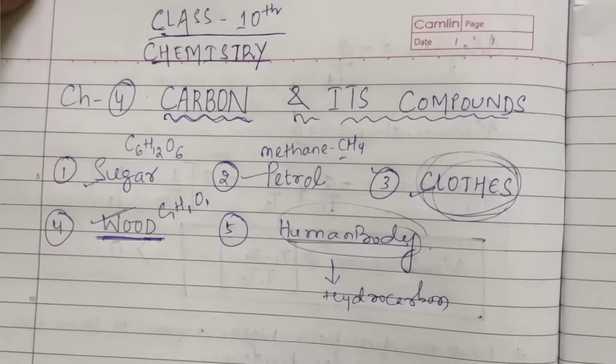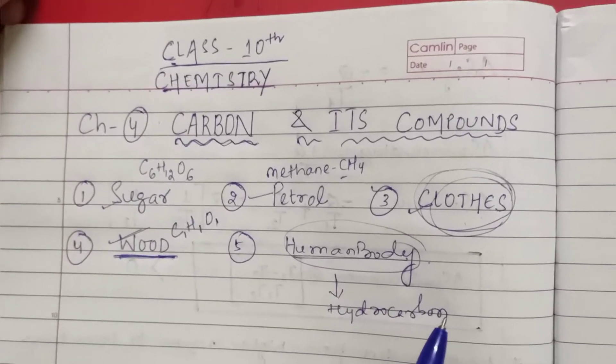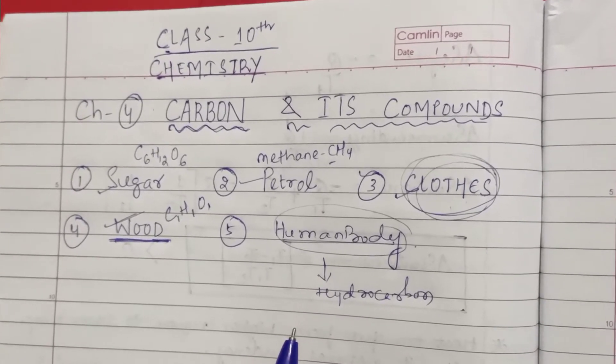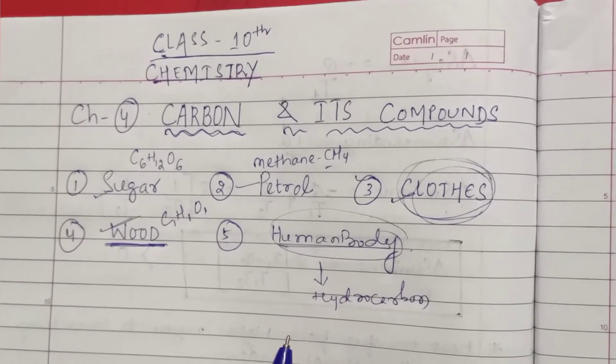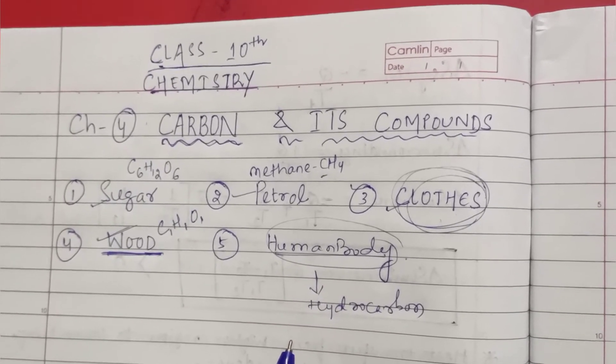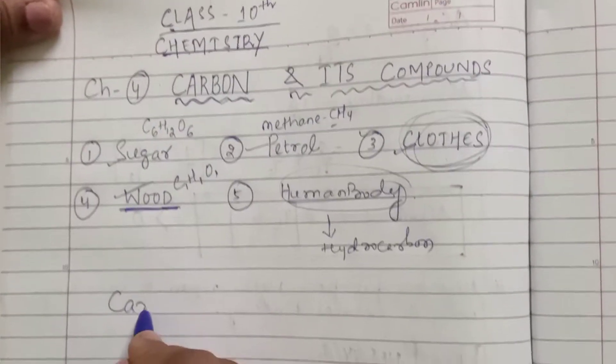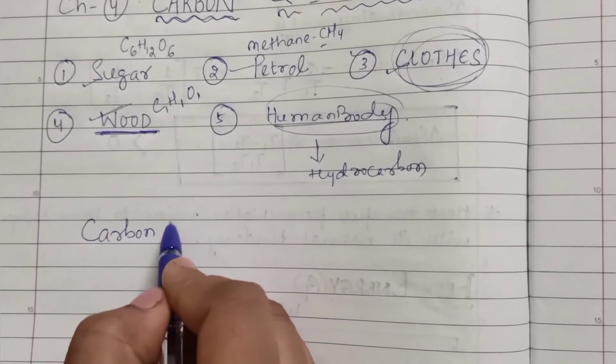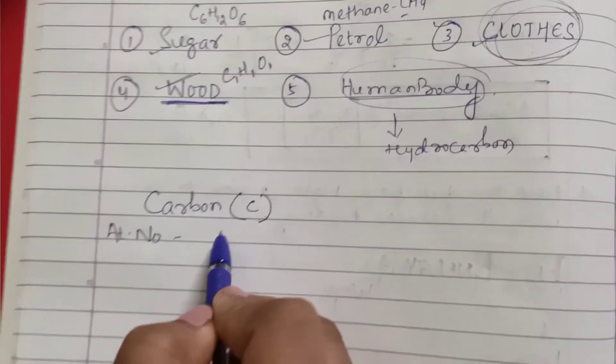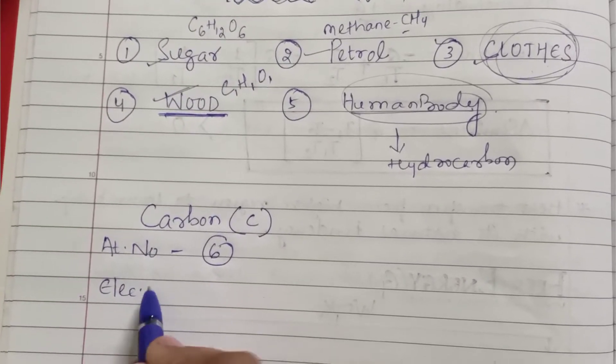Moving further in the chapter, what we are going to discuss and study is about the chemical reactions and the combinations that take place in carbon. Let's go for further studies. Suppose if we consider carbon as an element, let us first take carbon and understand its construction. The symbol of carbon is C and its atomic number is six.